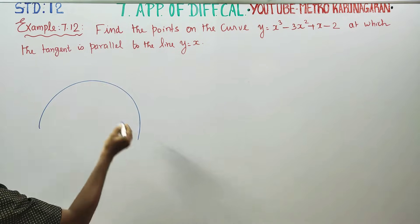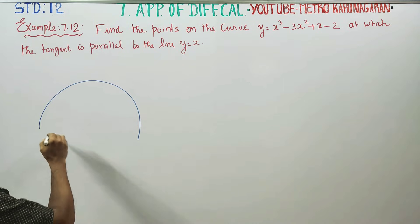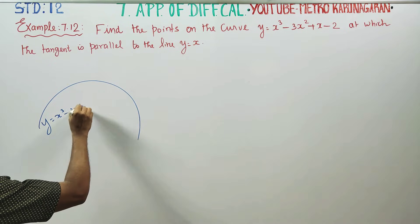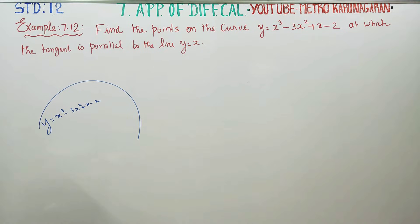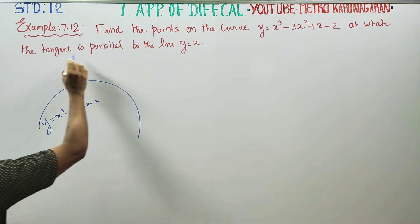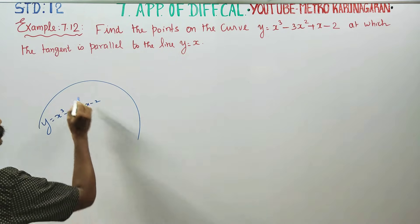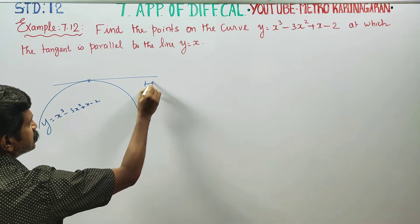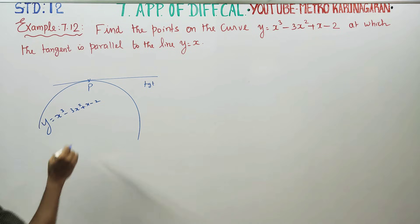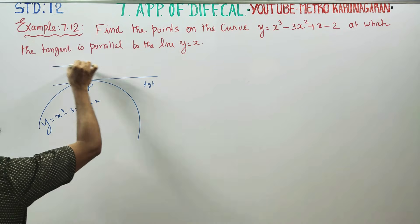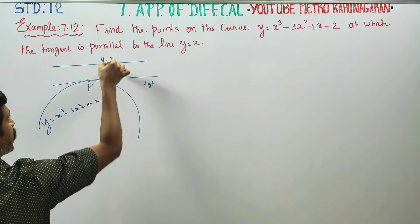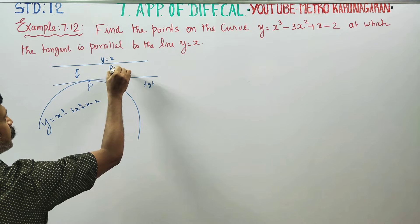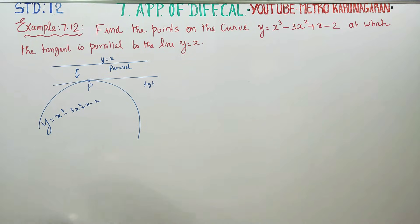This is the curve. The curve equation is y equals x³ minus 3x² plus x minus 2. The tangent is parallel to the line y equals x. The clue is that the tangent is parallel to the given line — this is the first clue.